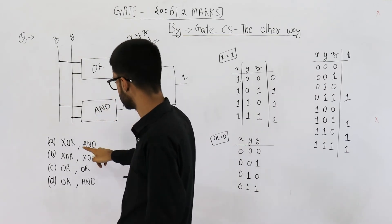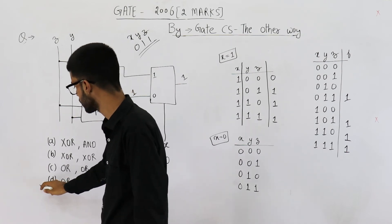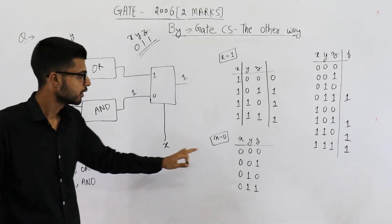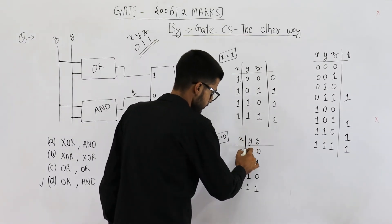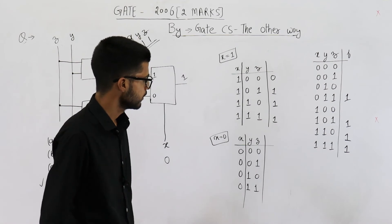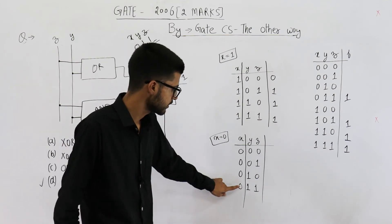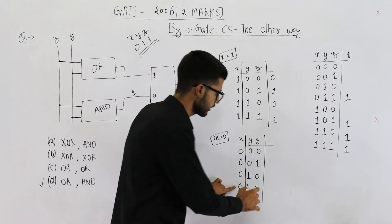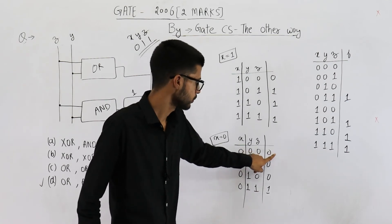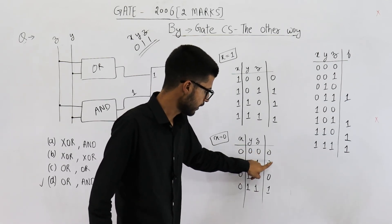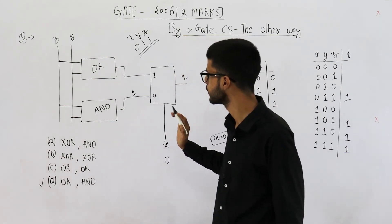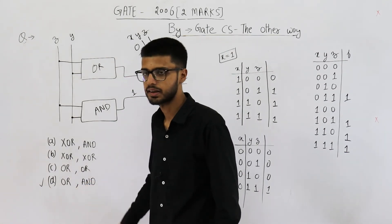The answer is OR comma AND, which is option D. We can verify using the truth table: with X fixed to zero, the only case where the output is one is when both Y and Z are one. In all other cases — when no input or only one input is high — the output is zero. So Q is the AND of Y and Z. The final answer is: P is OR, Q is AND.